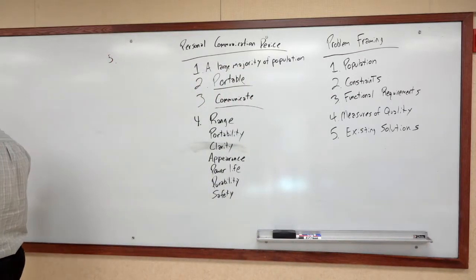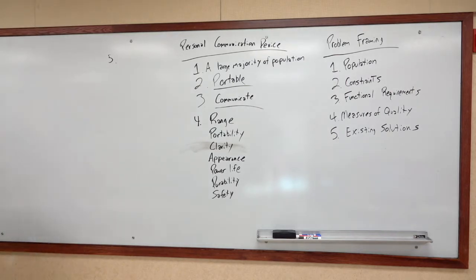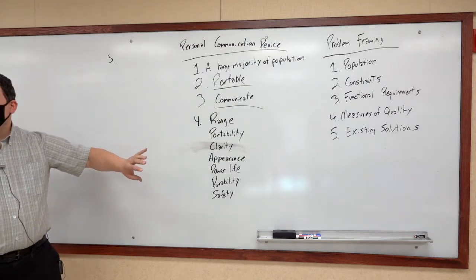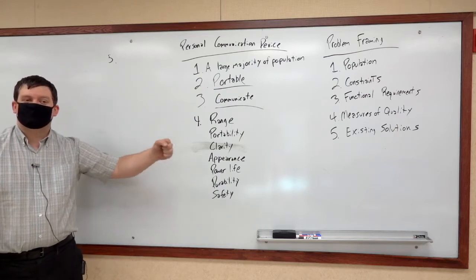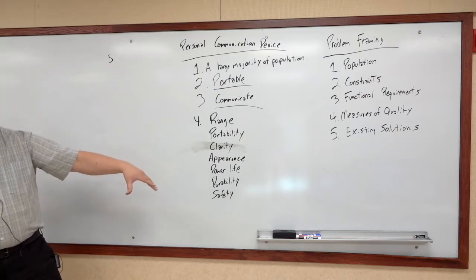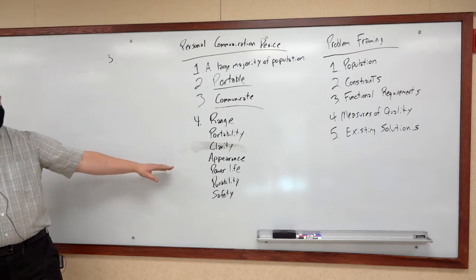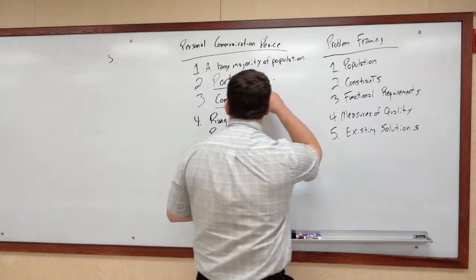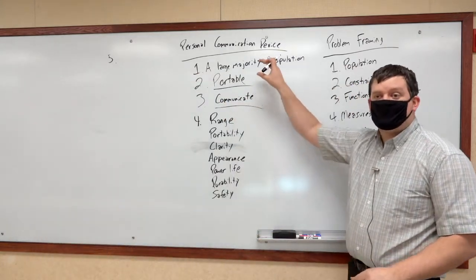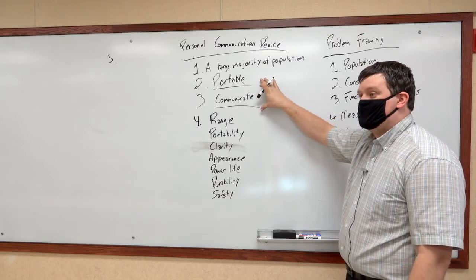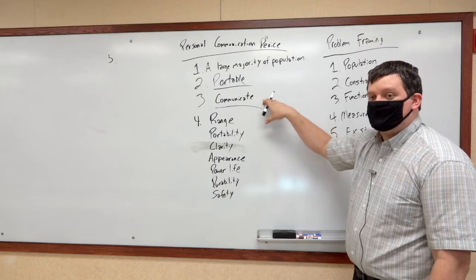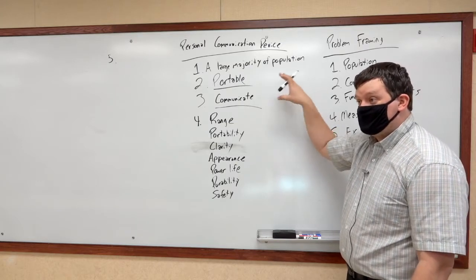Part five is identifying existing solutions. In order to identify existing solutions, we just need them to meet the two core criteria: communicate and be portable. These two things define a personal communication device. Everything that is portable and communicates is an existing solution to this problem.